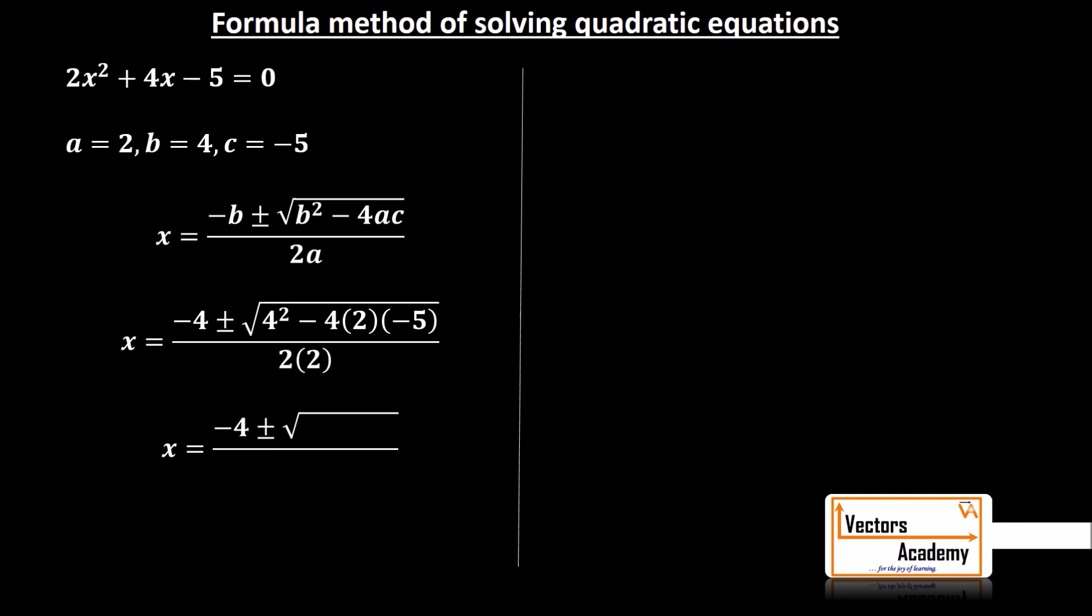Now, solving this further, minus 4 remains as it is. The square of 4 is 16. Minus 4 into 2 is minus 8 and minus 8 into minus 5 is plus 40. So, I'll get plus 40 here. And in the denominator, 2 into 2 will give you 4.